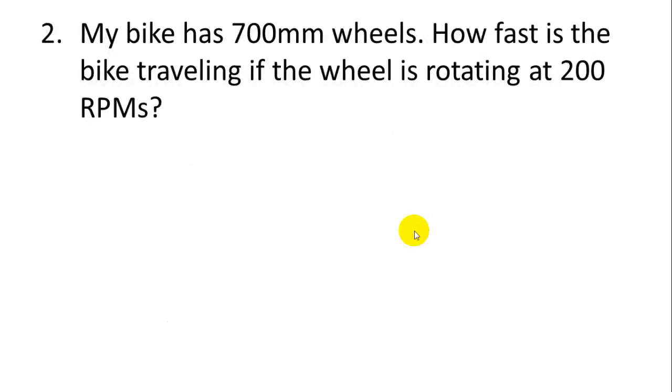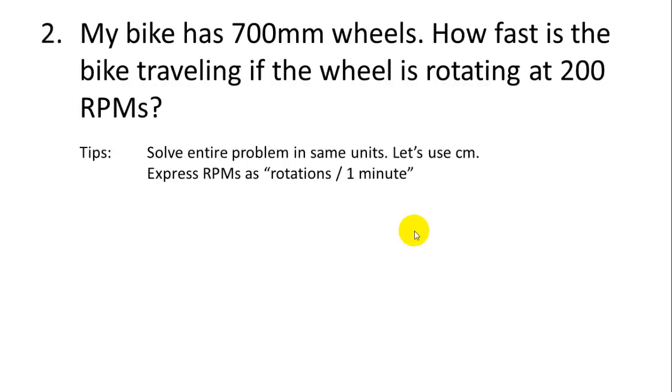My bike has 700 millimeter wheels. How fast is the bike traveling if the wheel is rotating at 200 rpm? So again, some tips. Let's solve the entire problem in the same units. In this case, millimeters is going to get kind of tough because the millimeter is really small. So let's use centimeters. Then we'll express rpms as rotations per one minute.